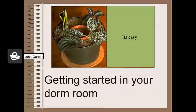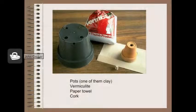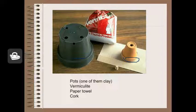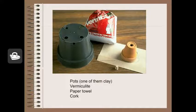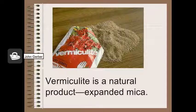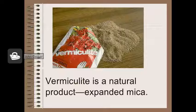You don't really need a lot of specialized equipment. Here's an easy way to get started: a couple of pots — one clay, one plastic is fine — some vermiculite or some light soil, a paper towel, and a cork. Vermiculite is a light rooting medium that both holds moisture and air. It's available in most garden centers and it's not too expensive.